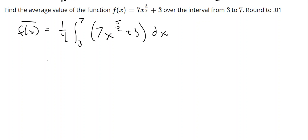So 1 fourth, then we're going to have 7 times 5 halves. We're going to add 1 to that. So 5 halves plus 1 is 5 halves plus 2 halves, which is 7 halves. So we're going to raise it to the 7 halves power and divide by 7 halves or multiply by the reciprocal 2 sevenths. And then 3x. And that is being evaluated from 3 to 7.